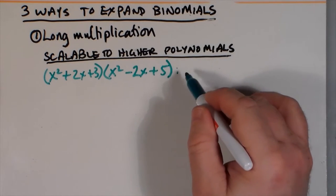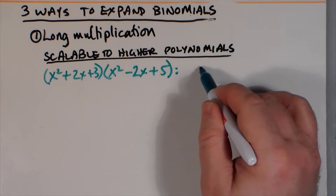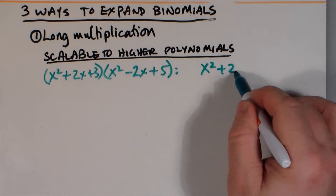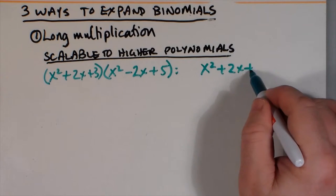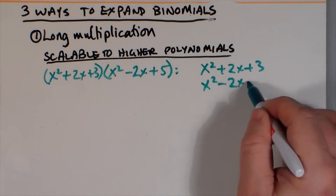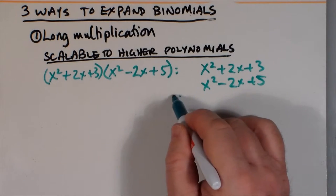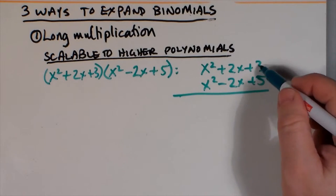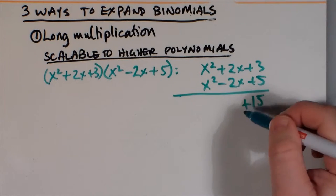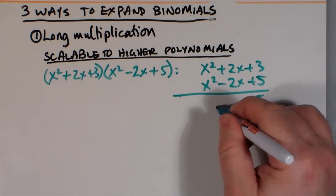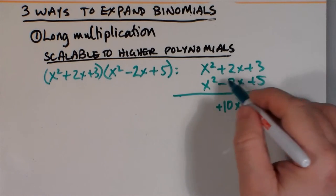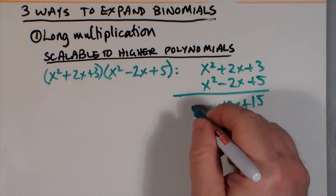x-squared plus 2x plus 3 multiplied by x-squared minus 2x plus 5. There's a fair bit of computation, but just make sure that the x's line up under the x's, the x-squared's line up under the x-squared's, and the x-cubes line up under the x-cubes, and everything should work out. Then it's just a matter of adding up the columns. Also watch your minus signs.